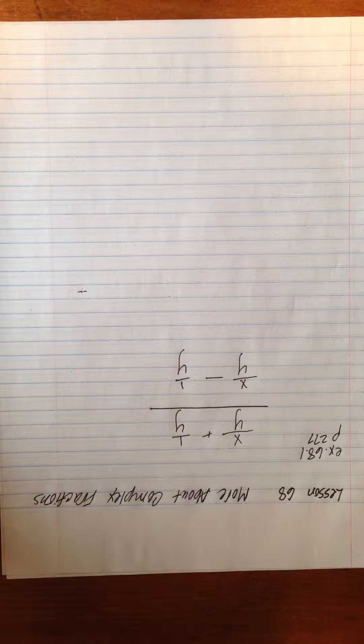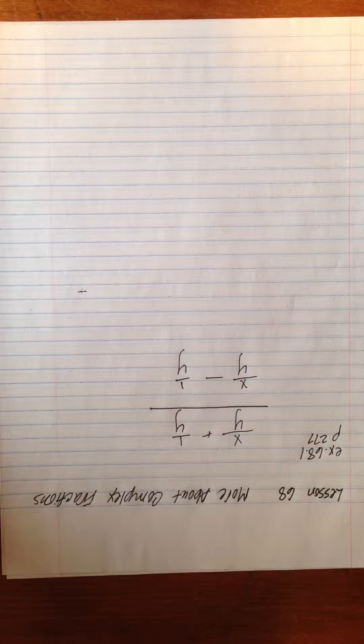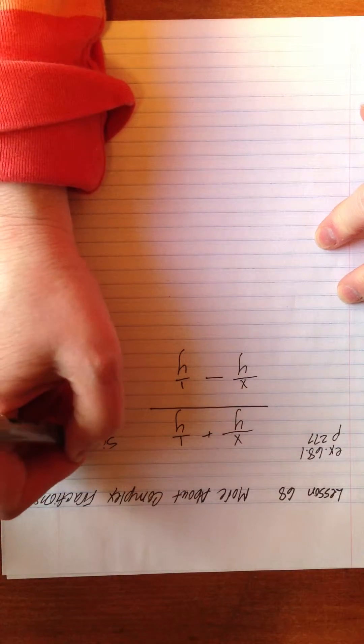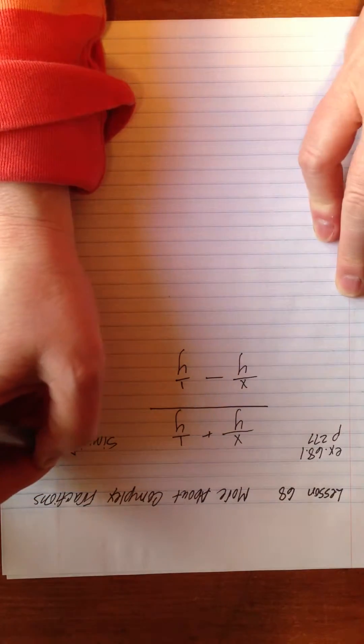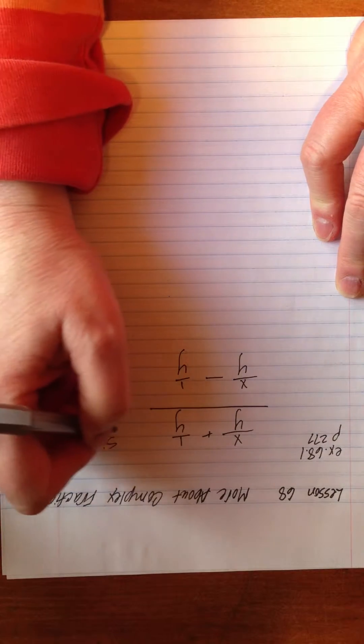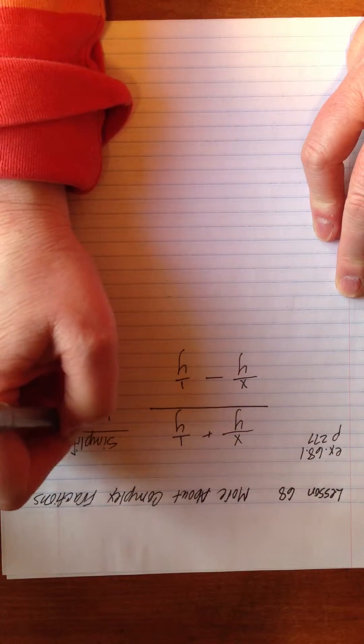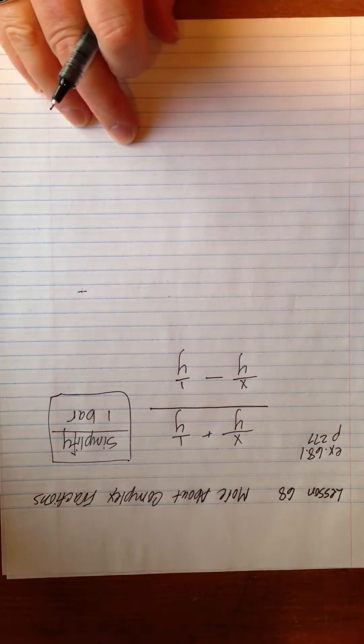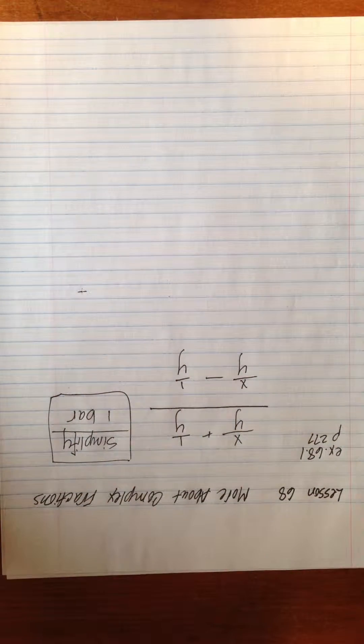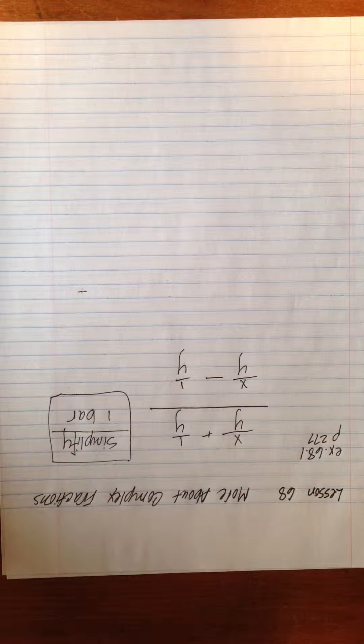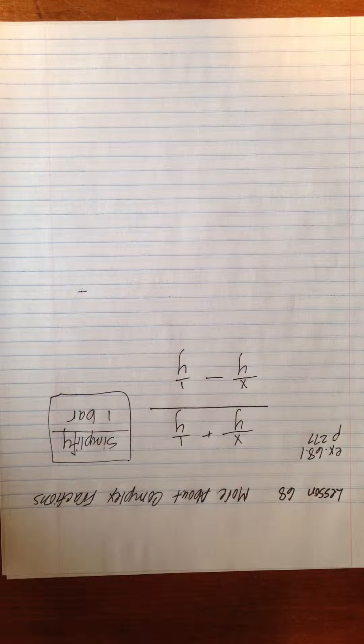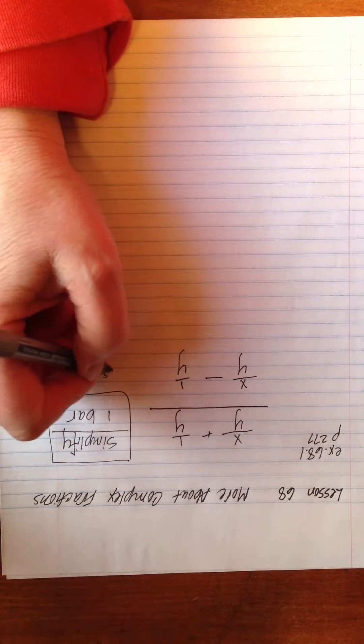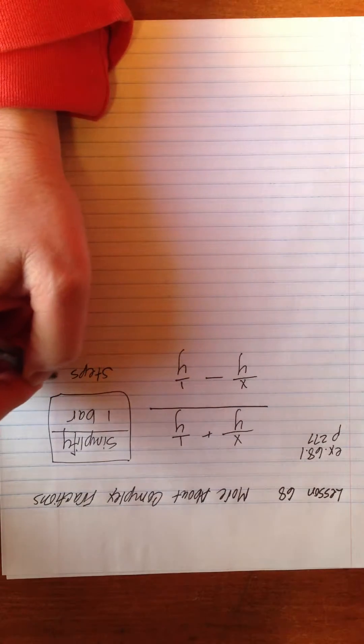And we are going to simplify this. And by simplify, we mean that we're going to get it down to one bar. Okay? Because that's a simple fraction rather than a complex fraction. So that is our task, you guys. We have to get this down to one bar. So here's some groovy steps to make that happen.